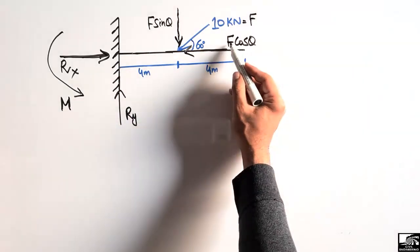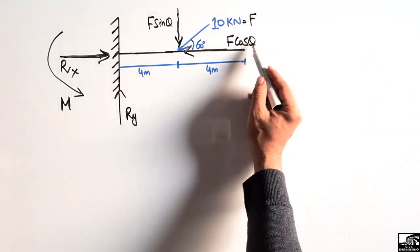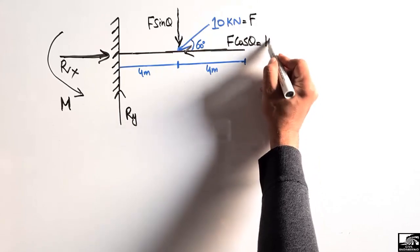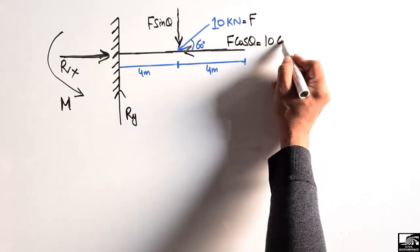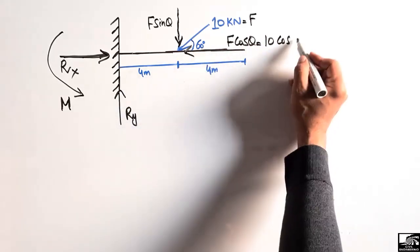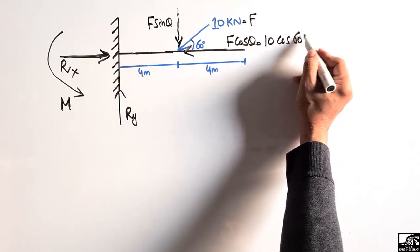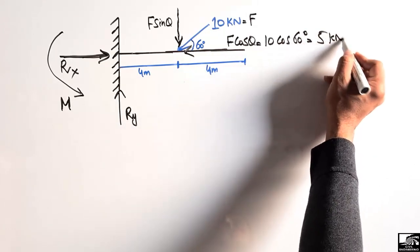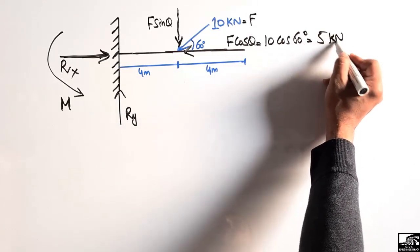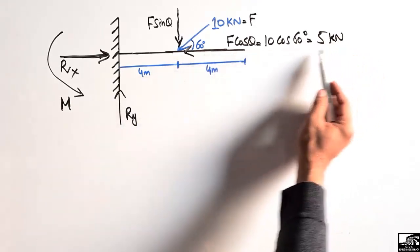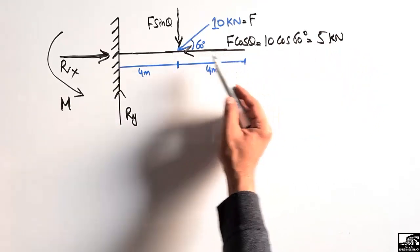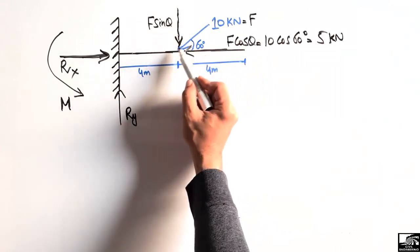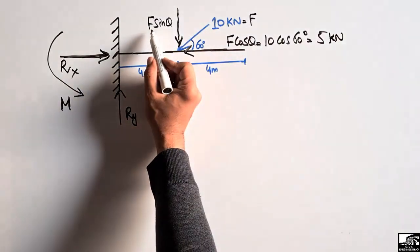Now, F is 10 kilonewtons and θ is 60 degrees. The horizontal component is F·cos(θ) = 10·cos(60°) = 5 kilonewtons. So 5 kilonewtons is acting horizontally on this beam.